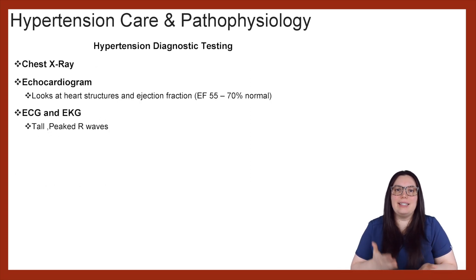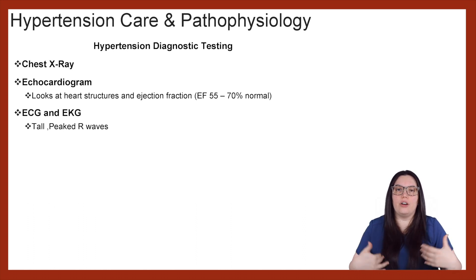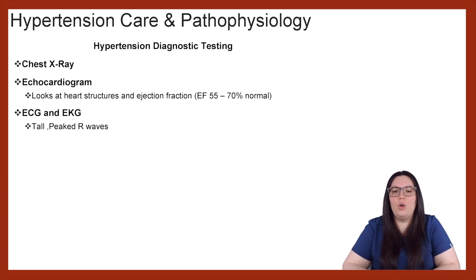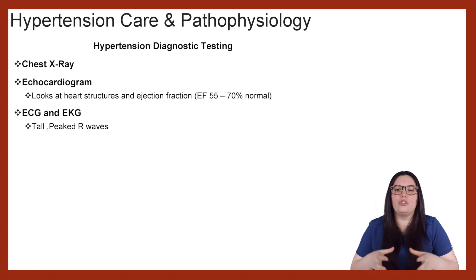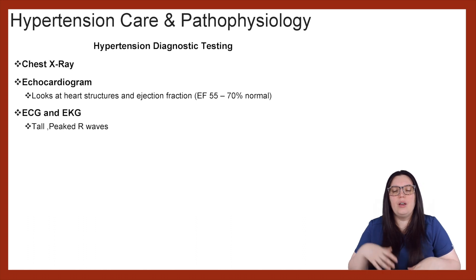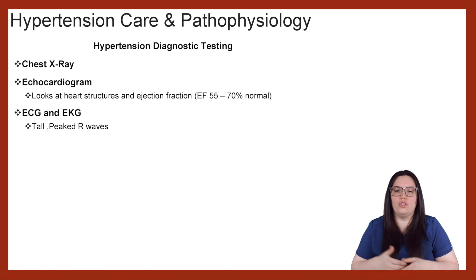So what are some diagnostic tests we can do when it comes to hypertension? We can get a chest X-ray to look at what's going on with our heart — is the heart enlarged? Is there congestion? We can do an echocardiogram, which takes a look at the heart structures as well as the ejection fraction. We like to see an ejection fraction between 55 to 70%, which is within normal. Once we start getting out of those normals, we start to see damage or poor perfusion to our heart and body.